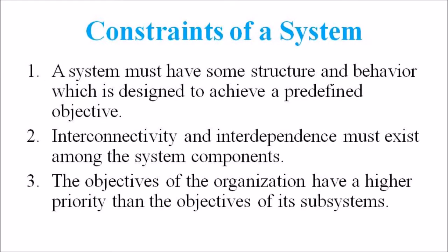The major constraints of a system include three basic constraints. The first one is that a system must have some structure and behavior which is designed to achieve a predefined objective. The second one is that interconnectivity and interdependence must exist among the system components. And thirdly, the objective of the organization must have a higher priority than the objective of its subsystems.